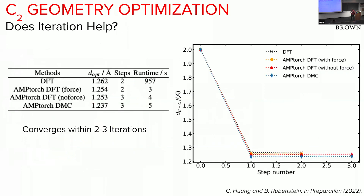The same forces can be used for geometry optimization. Fully ab initio DFT has much longer runtimes — factors of hundreds. Despite imperfect forces from the neural network, reasonable structures can be reached in two to three optimization iterations, within less than 1% error. So even though forces are not exact, geometry optimization works reasonably well, at the cost of perhaps a few more iterations — still far less than a factor of a hundred overhead.